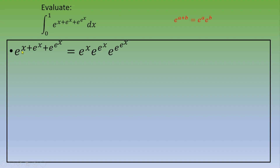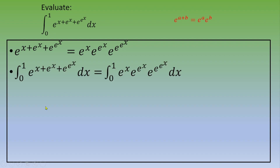e to the x plus e to the x plus e to the e to the x equals e to the x, times e to the e to the x, times e to the e to the e to the x. So now your integral becomes the integral from zero to one of e to the x times e to the e to the x times e to the e to the e to the x dx.